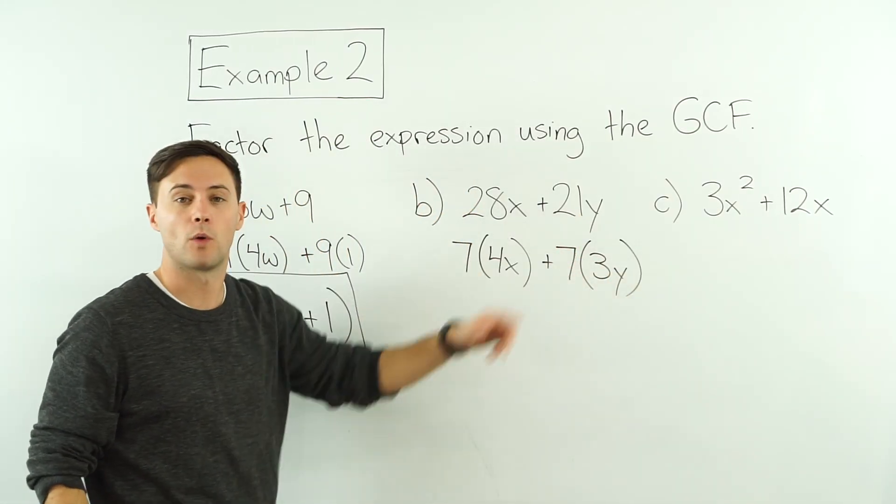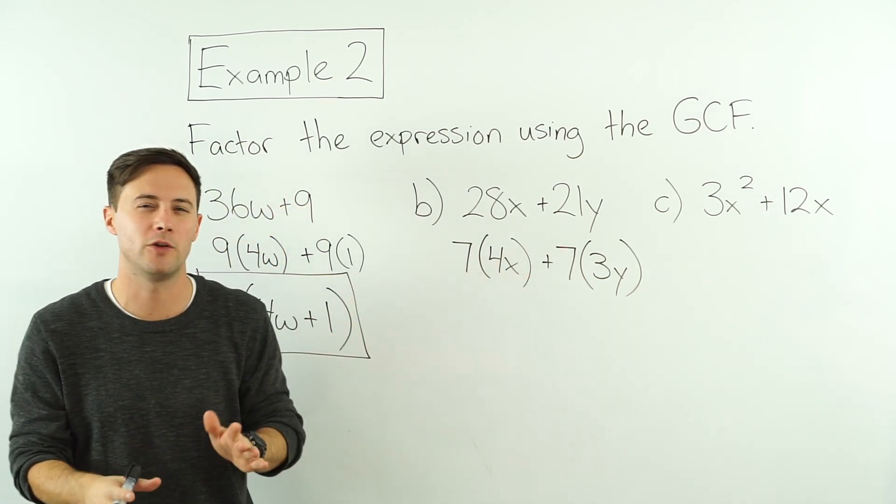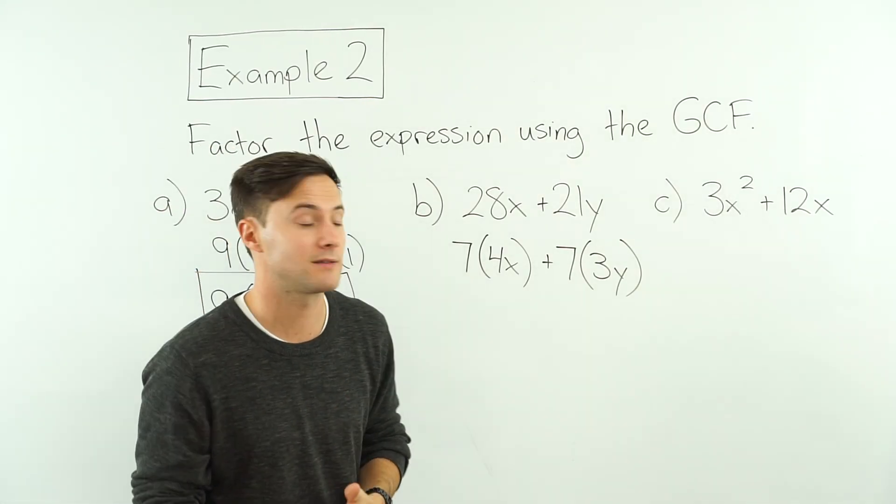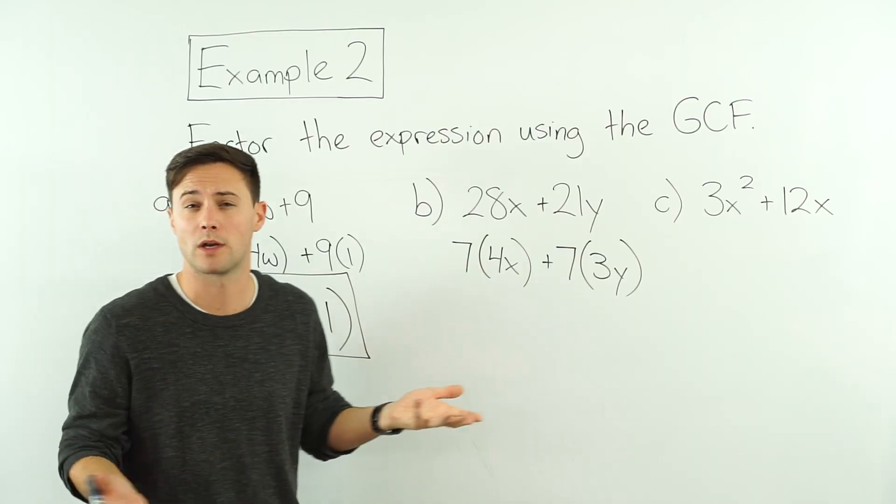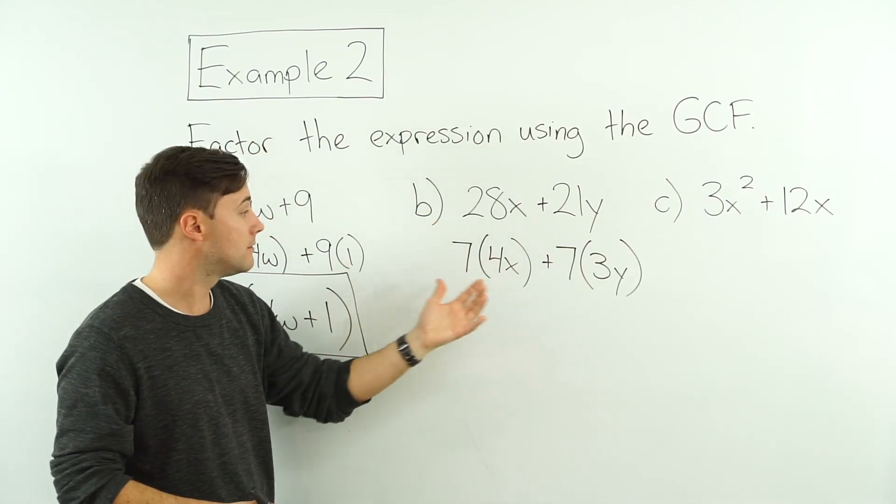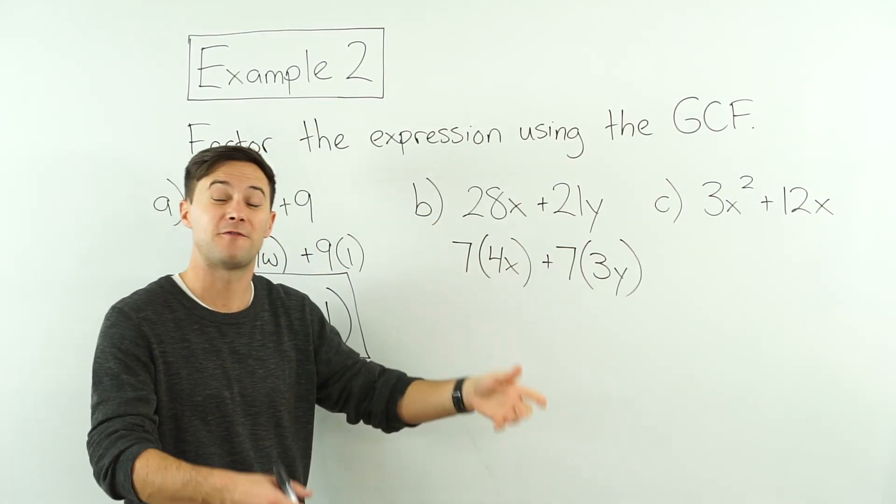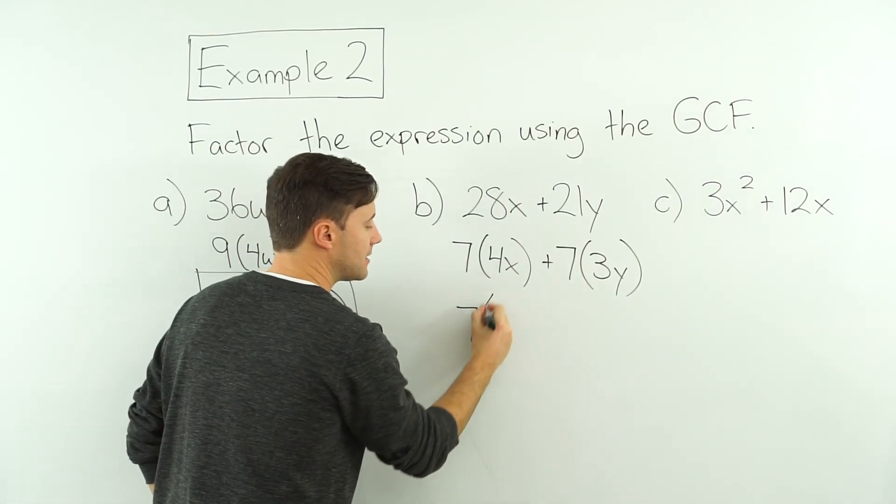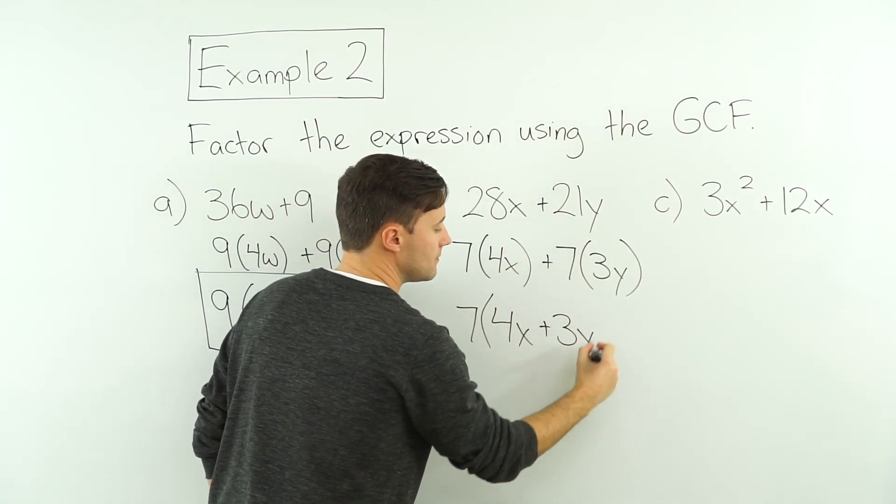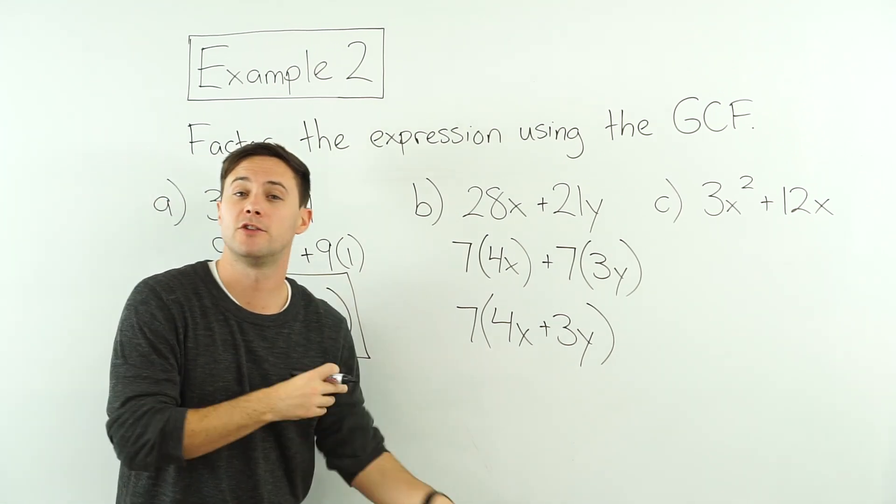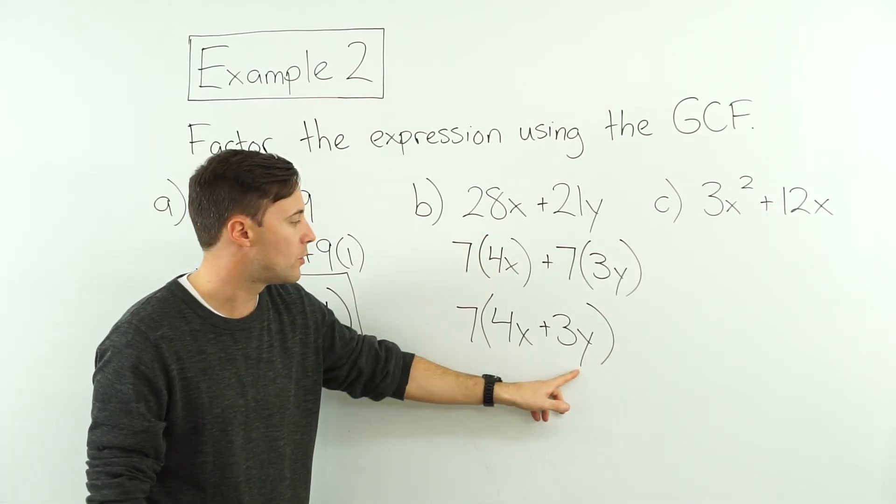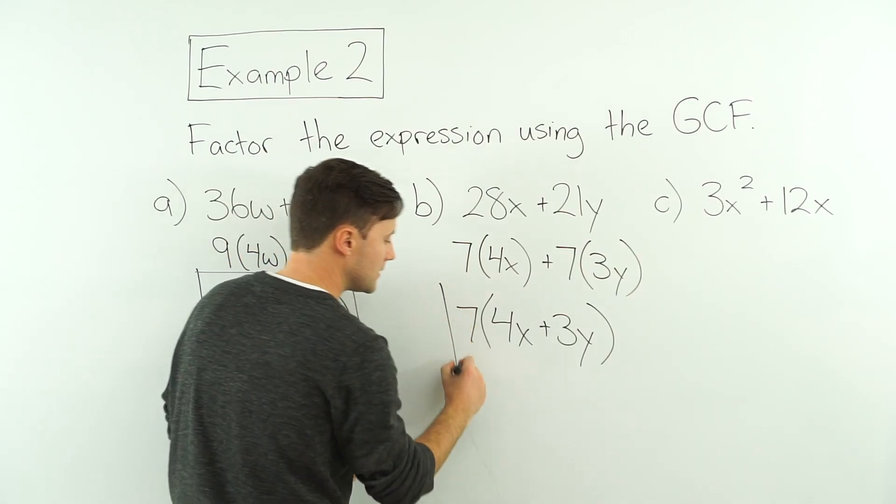7 times 3y is 21y. So notice I'm not changing the value here at all, right? These are all going to be equivalent expressions. Nobody's changing the value. We're just changing what it looks like. That's all we're doing. So now let's divide out that 7 from both terms. Let's factor it out. So I've got 7 times 4x plus 3y. And again, if I want to double check, just use the distributive property. 7 times 4x is 28x, plus 7 times 3y is 21y. So I'm going to box that.